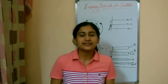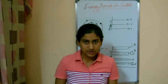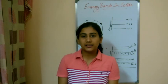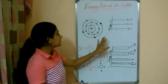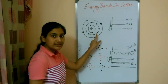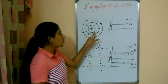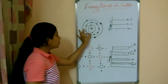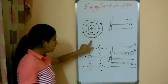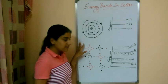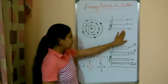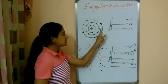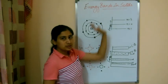In this video we are going to study how energy bands are formed in solids, or how conduction band and valence band are formed. In a particular atom there is a nucleus surrounded by electrons. These electrons are present in particular orbits, and these orbits have particular energies, so they are also called energy levels. The energy of the electron in the first orbit is represented here, and electrons in the second orbit have this energy, and so on.